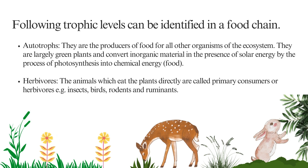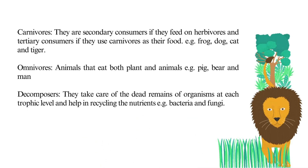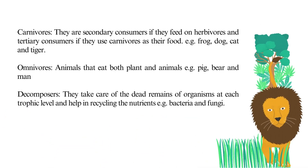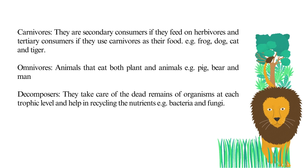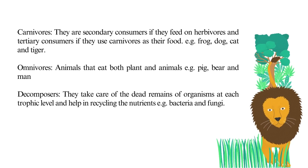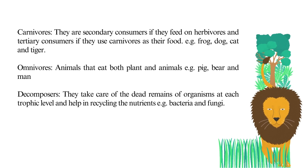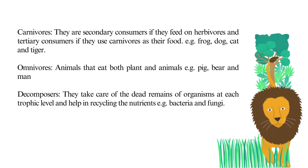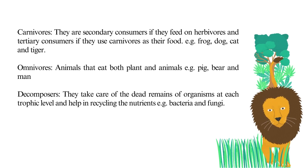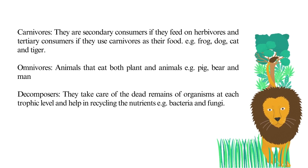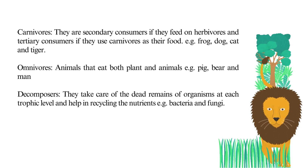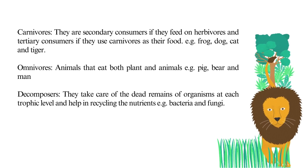ruminants. Carnivores: they are secondary consumers if they feed on herbivores, and tertiary consumers if they use carnivores as their food — for example, frog, dog, cat, and tiger. Omnivores: animals that eat both plants and animals — for example, pig, bear, and man.